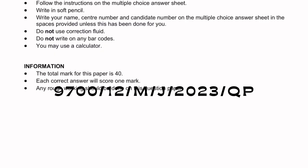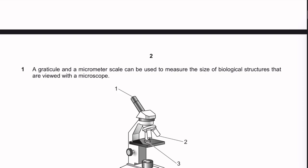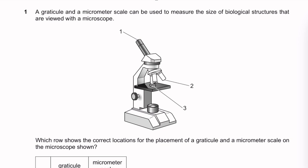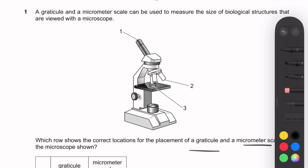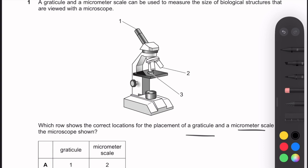Question 1: A graticule on a micrometer scale can be used to measure the size of biological structures viewed with a microscope. Which row shows the correct locations for placement of the graticule and the micrometer scale? The graticule must be placed on the eyepiece lens, while the micrometer scale is placed on a slide, which is placed on the stage — that's position number three.